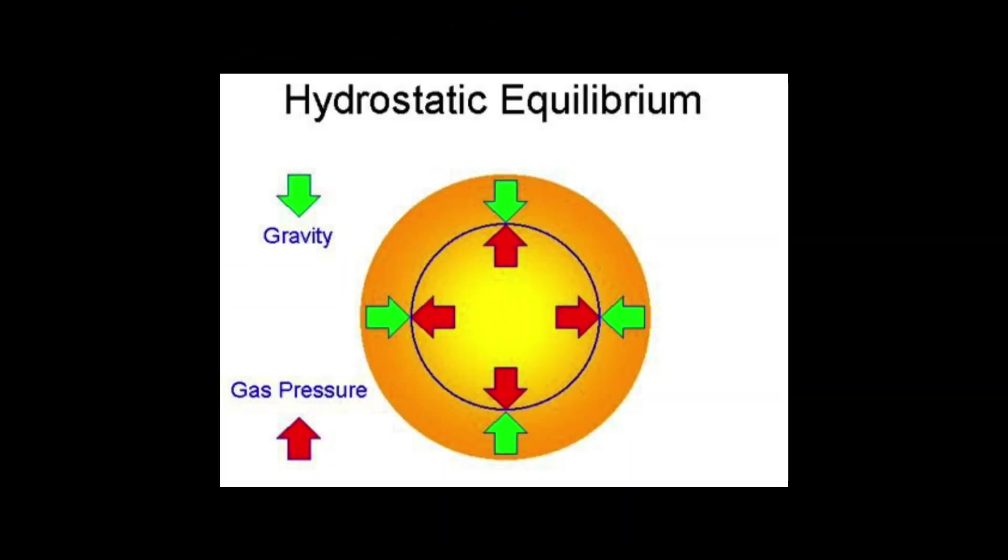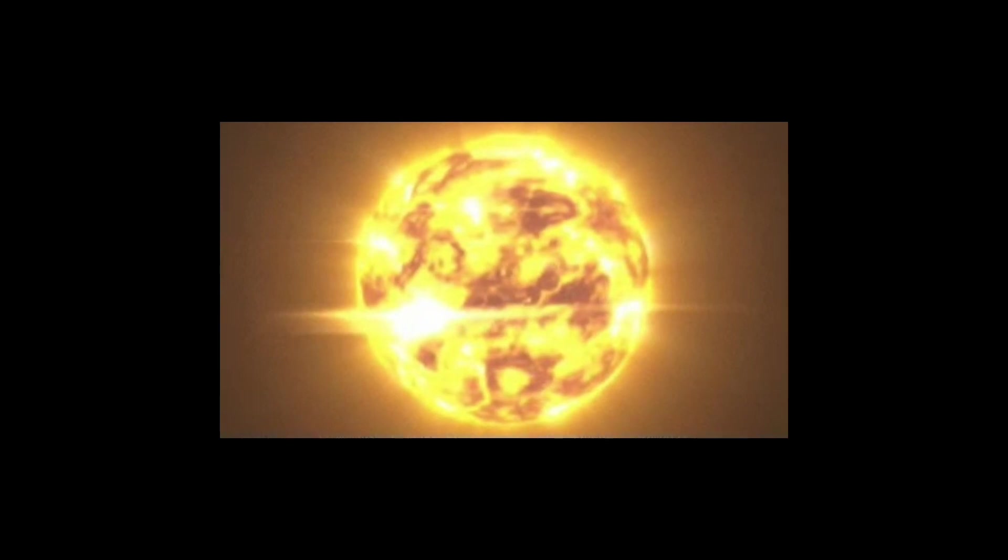Due to this, the central atoms push outwards with more force, while the outer atoms exert less pressure. This balance keeps our star stable enough to avoid gravitational collapse.